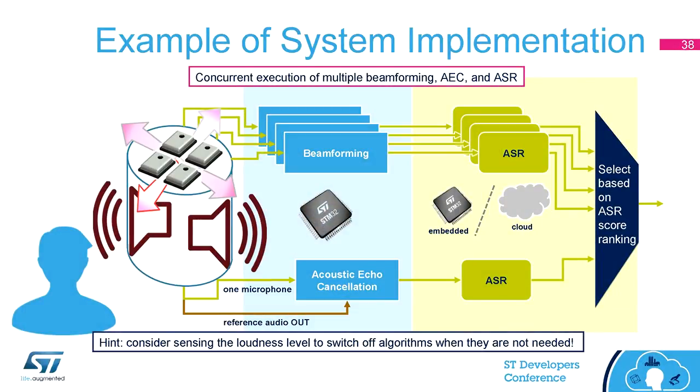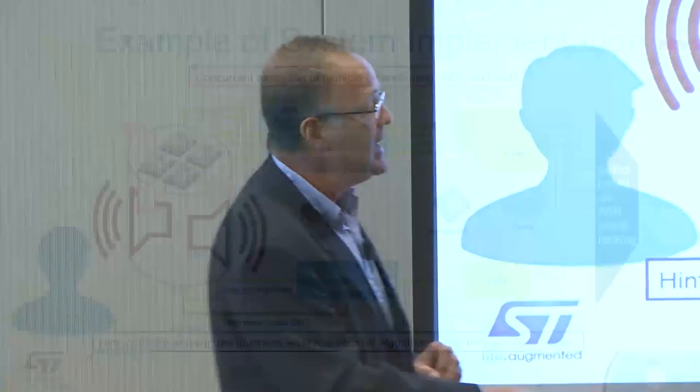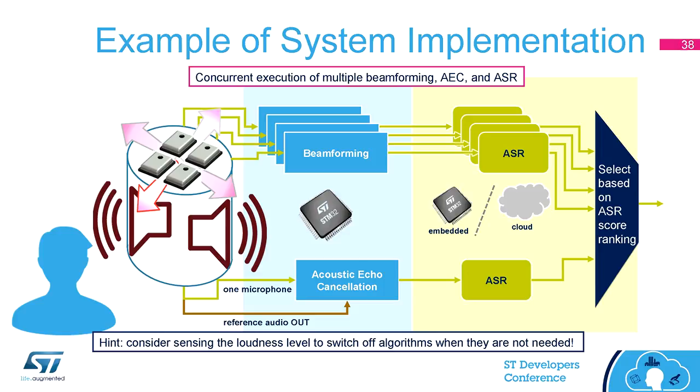The most complex case is where the system works in a noisy environment, must identify the speaker and beamform towards the speaker, but must also get rid of audio the system itself is reproducing from loudspeakers. We follow the same approach: run four beamforming routines and acoustic echo cancellation at the same time on an STM32F7. We need very optimized routines so they will fit; you must be very careful optimizing the MIPS performance of your routines. We perform five ASR instances and select based on the ASR score. We may also choose to disable acoustic echo cancellation when the system is not playing back music.